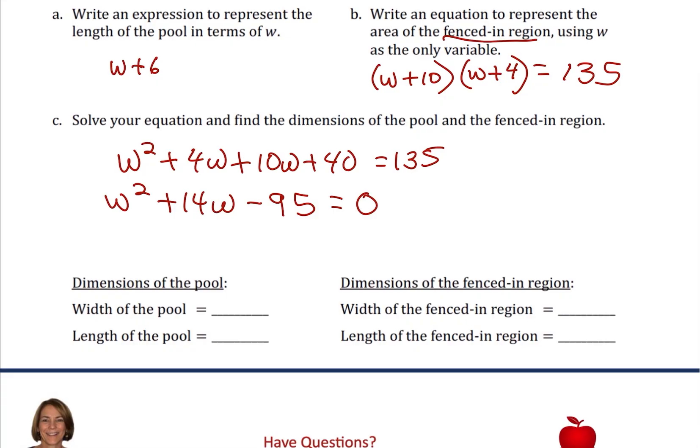So we now have to think of two numbers that add to 14 and multiply to negative 95, and the two numbers that I'm thinking, we're going to have a negative 5 and a positive 19, because negative 5 times 19 is going to be a negative 95, and it also adds to a positive 14. So now I can factor it as W minus 5 times W plus 19 equals zero. All right, so now we're ready to solve.